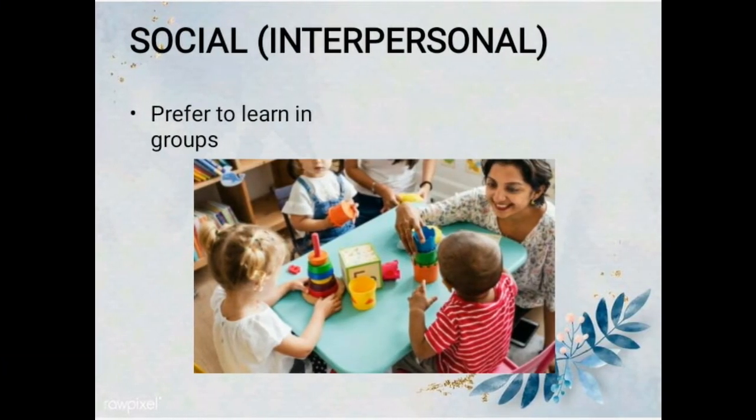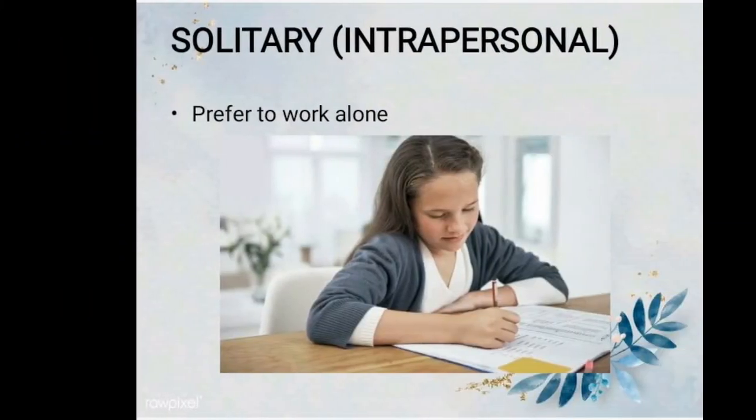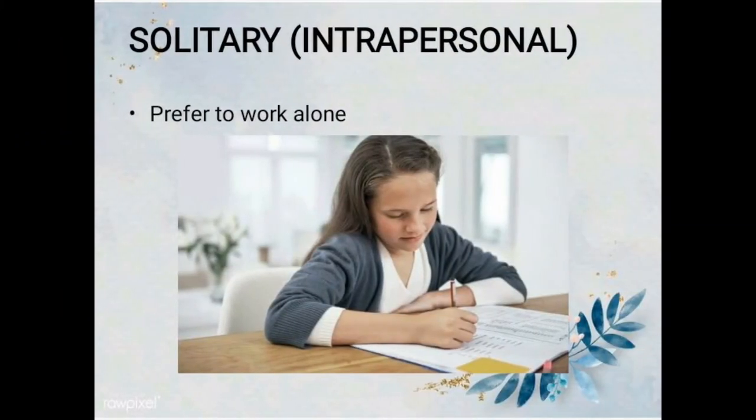Number six: social or interpersonal — you prefer to learn in groups or with other people. Number seven: solitary or intrapersonal — you prefer to work alone and use self-study.